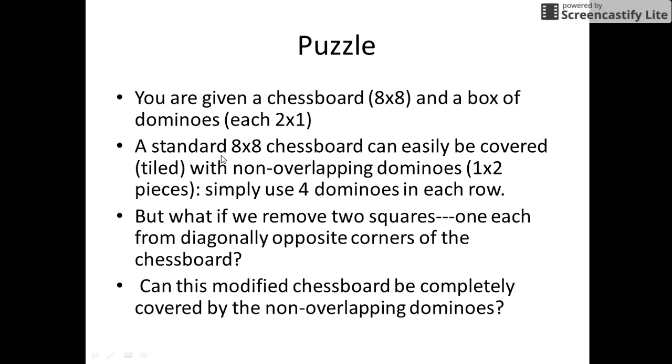A standard 8x8 chessboard can easily be covered with non-overlapping 1x2 dominoes, simply using 4 dominoes in each row. But what if we remove two squares, one each from diagonally opposite corners of the chessboard? Can this modified chessboard be completely covered by the non-overlapping dominoes?